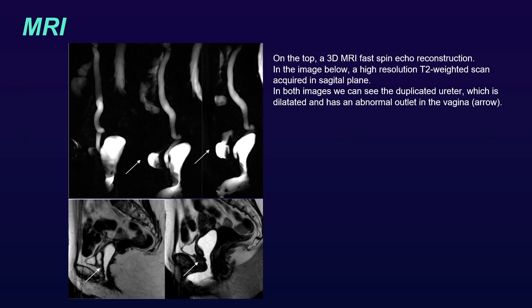On the MRI, we can see in both images the duplicated ureter, which is dilated and has an abnormal outlet in the vagina, marked with arrows. On the top, a 3D MRI fast FIESTA reconstruction. On the images below, a high-resolution T2-weighted scan acquired in the sagittal plane.